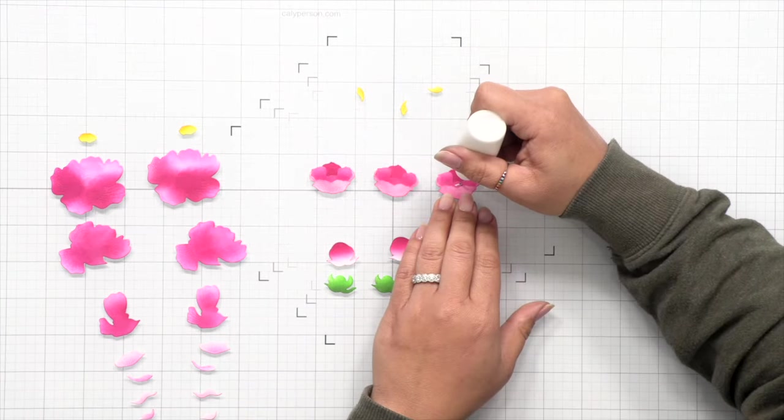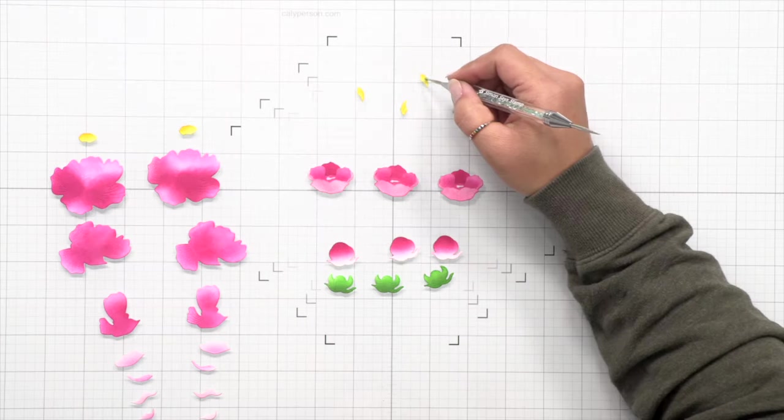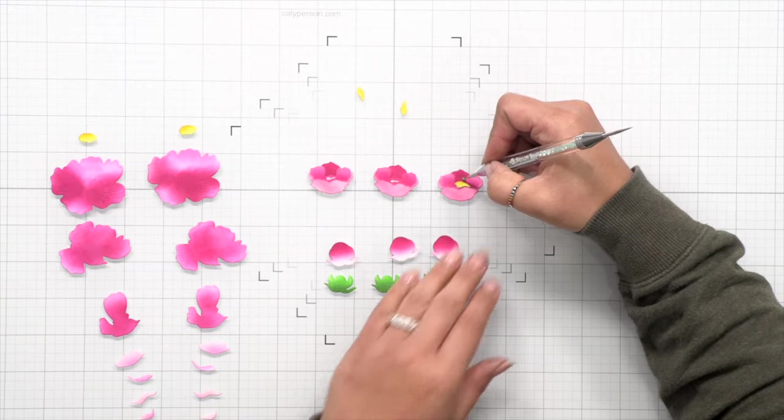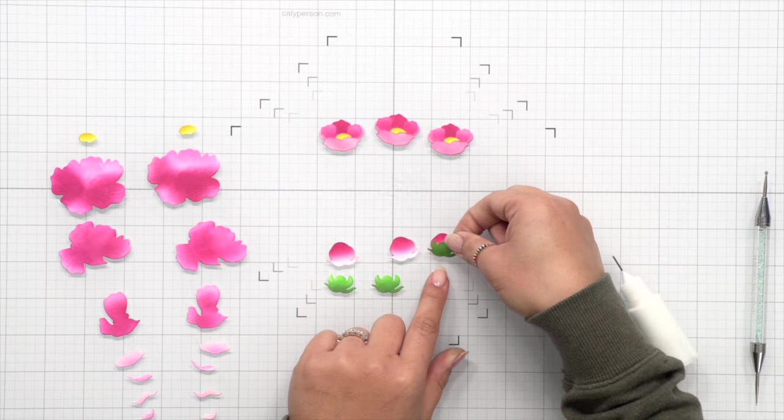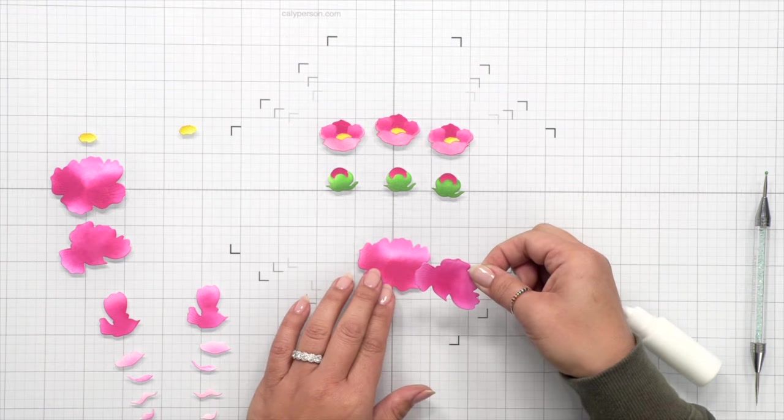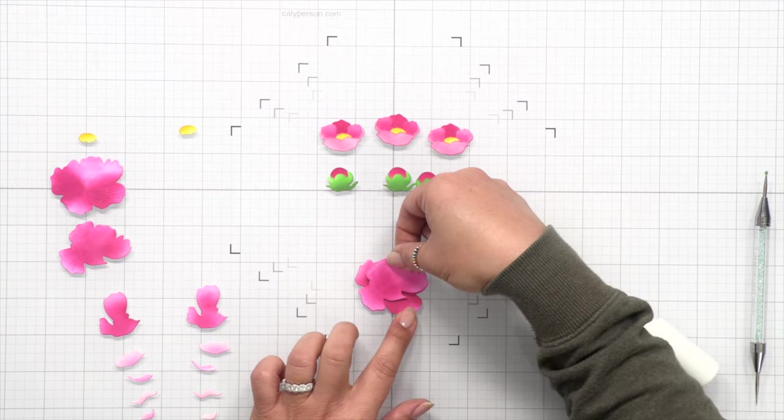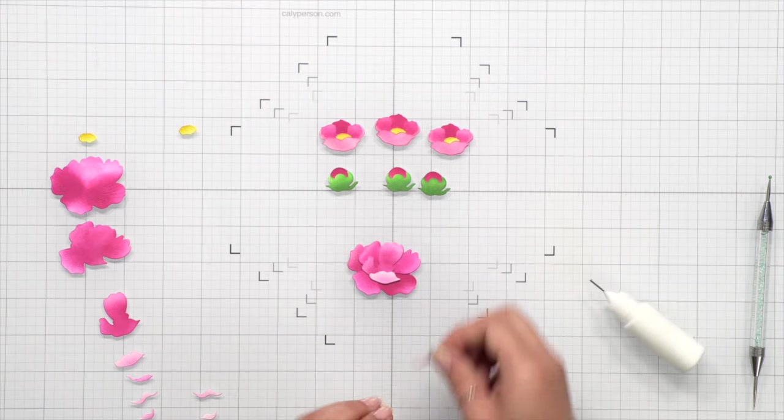Now on these larger die cuts, Honey Bee Stamps makes it real obvious what is going to be visible because the areas that are visible are etched with details. So it was super easy for me to identify where I should ink blend darker shading and where I can lay off on the ink so that I don't waste ink.